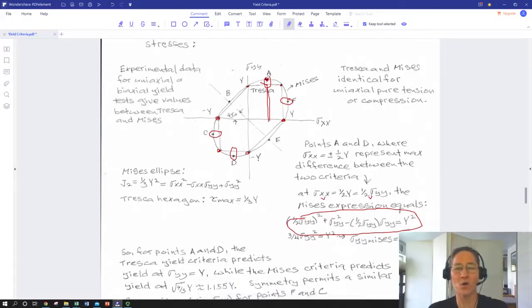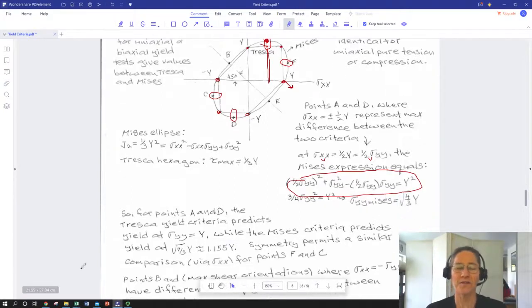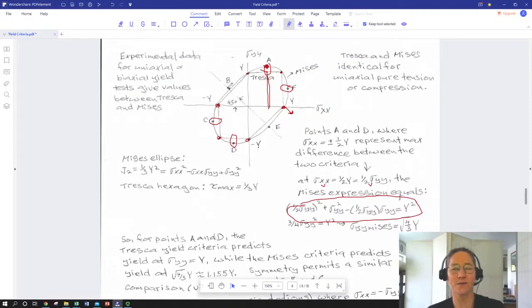The sigma_yy value corresponding to point A on the von Mises ellipsoid is the square root of four thirds times our big capital Y, which is that value of uniaxial single direction stress that would have led to yield, which is easier to see in Tresca. Square root of four thirds is about 1.155, so it's not that different but it is different by a few percent. That's the maximum difference you're going to get between the two.